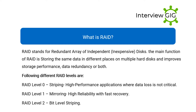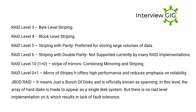RAID Level 0 — striping, used for high-performance applications where data loss is not critical. RAID Level 1 — mirroring, for high reliability with fast recovery. RAID Level 2 — bit-level striping. RAID Level 3 — byte-level striping. RAID Level 4 — block-level striping. RAID Level 5 — striping with parity, preferred for storing large volumes of data.